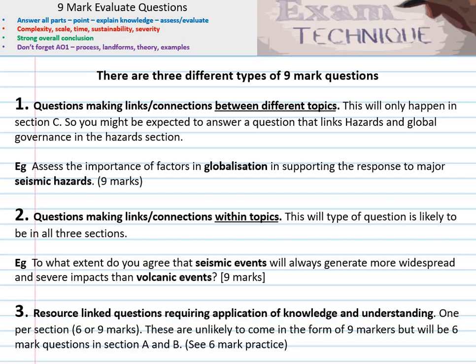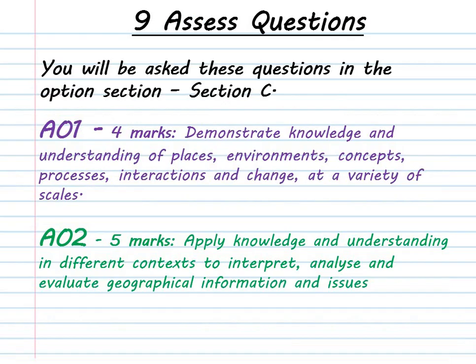It might be that you're looking at links between hazards and globalisation, or possibly hazards and changing places when considering the physical paper. Just to confirm: 4 marks for AO1 and 5 marks for AO2. If you're not sure about the difference between AO1 and AO2, have a look at the video that talks through the structure of the paper.